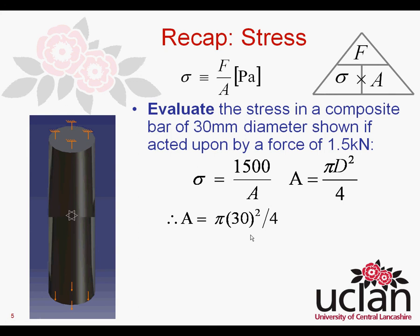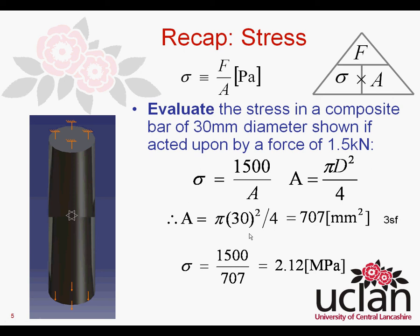Therefore, we find our area as pi times 30 squared divided by 4, which turns out to be 707 to 3 significant figures. In the last lesson we rounded to a couple of decimal places like GCSE maths, but now we're thinking more like engineers — and engineers usually work to 3 significant figures, because thereafter we have a change in an order of magnitude. So the stress is simply 1500 divided by 707, which gives 2.12 — and we remember that newtons per millimeter squared, which is what we calculated, is equal to the megapascal.